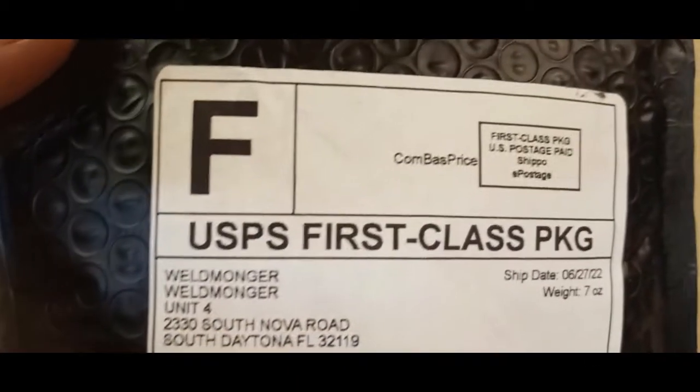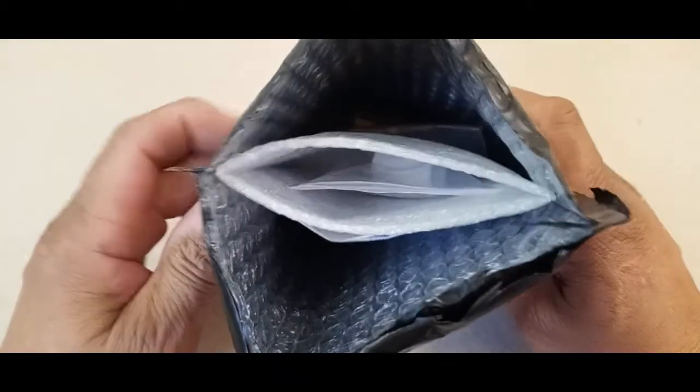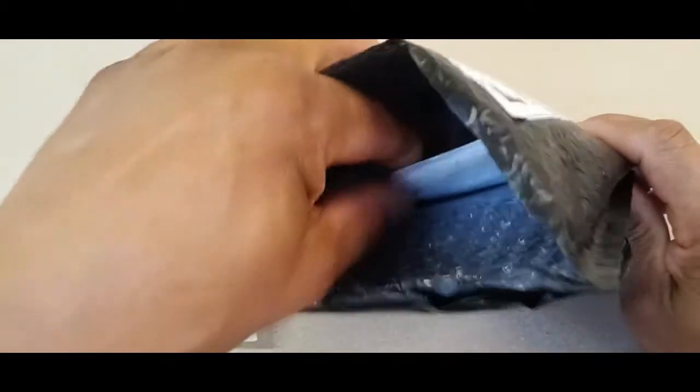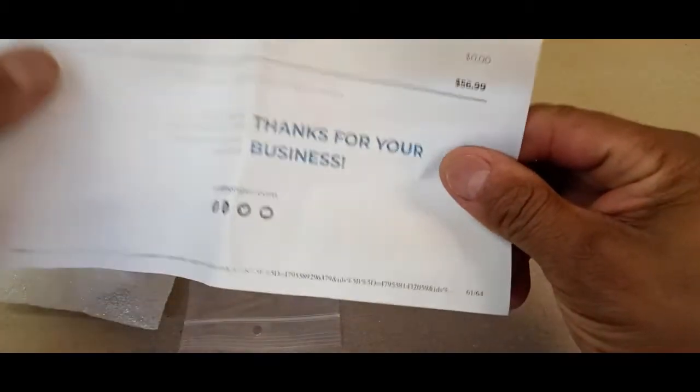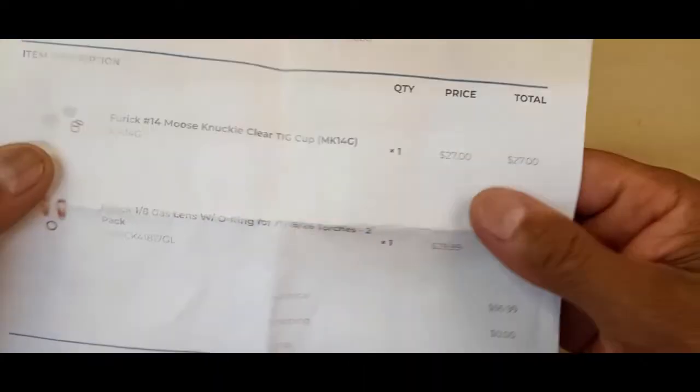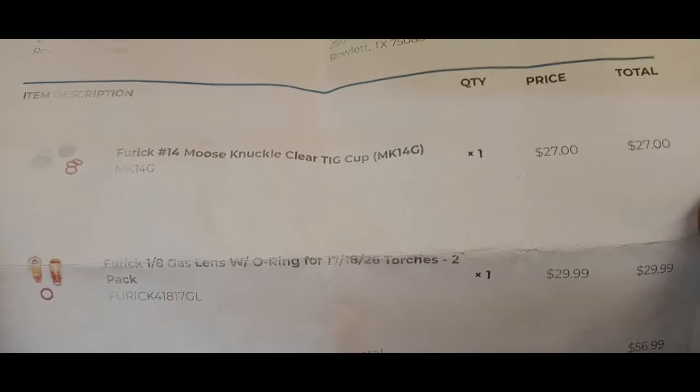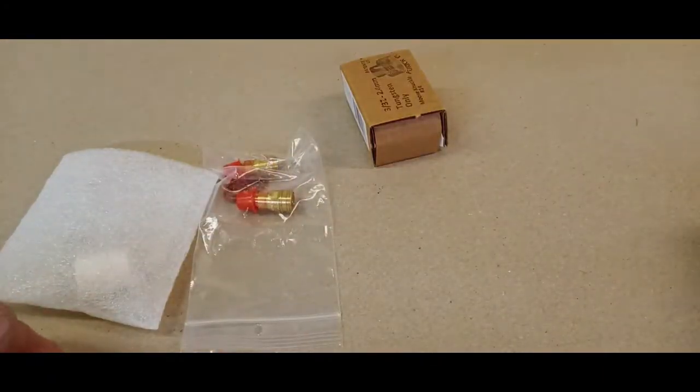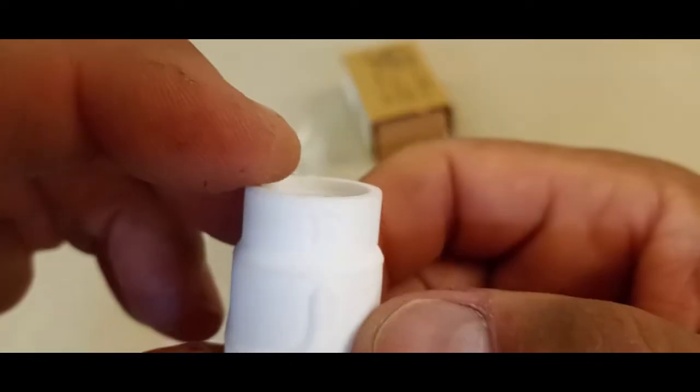We just got our package in from Wellmonger.com. If you want to buy some high quality consumables, welding products, that's the place to do it. I took advantage of a special that they had. If you order a certain amount, they send you a free Jazzy Tin Furek ceramic cup along with it. I got a number 14 Furek clear cup and the Furek gas lenses. We're going to take a look at everything and see what it's all about.